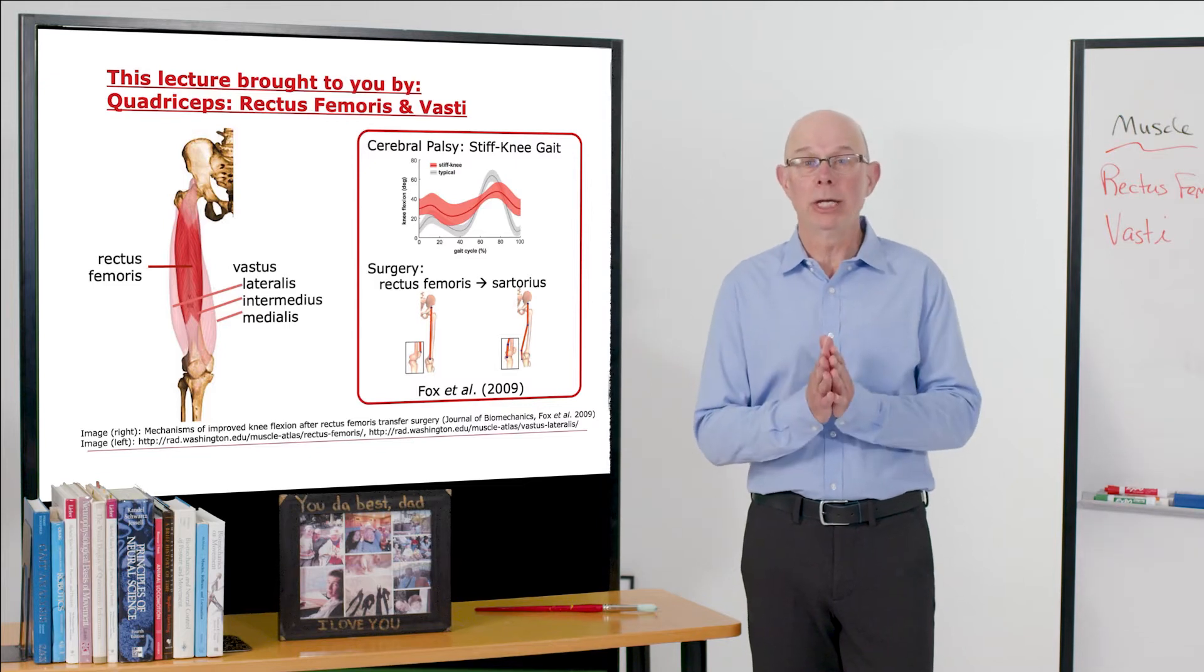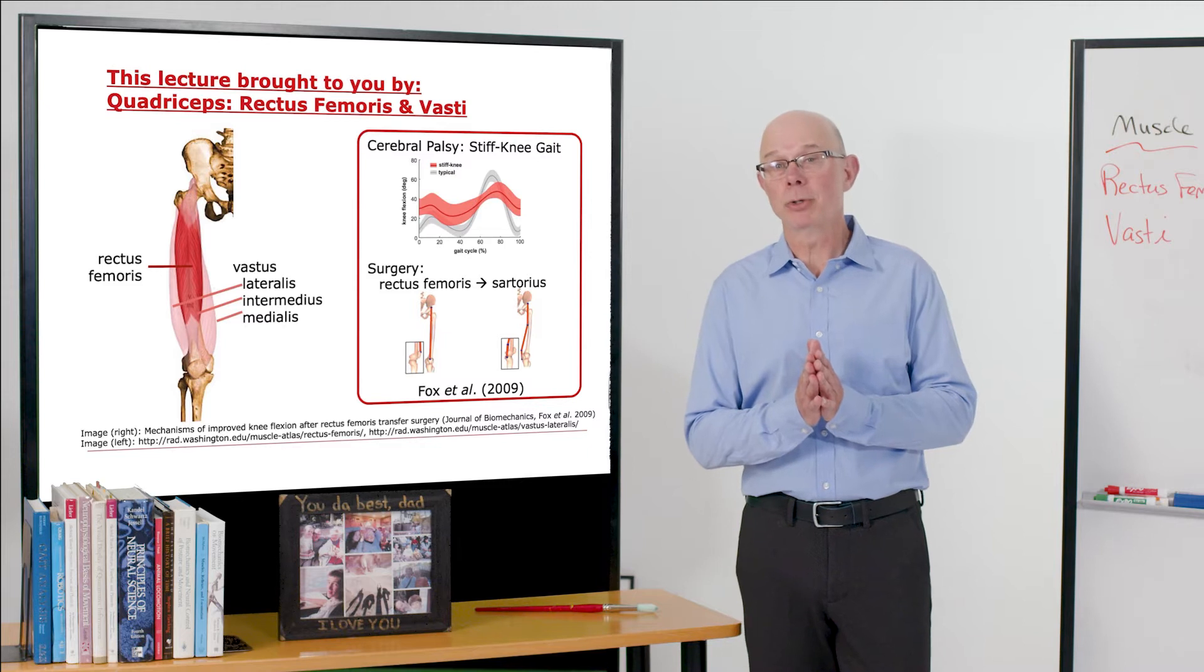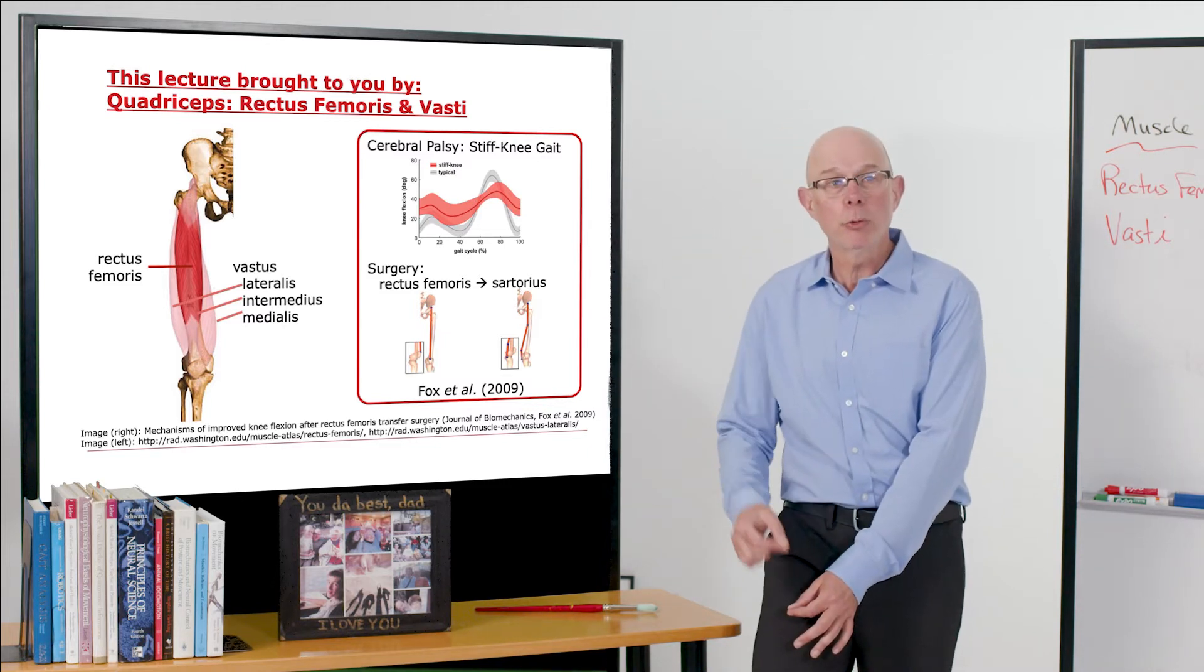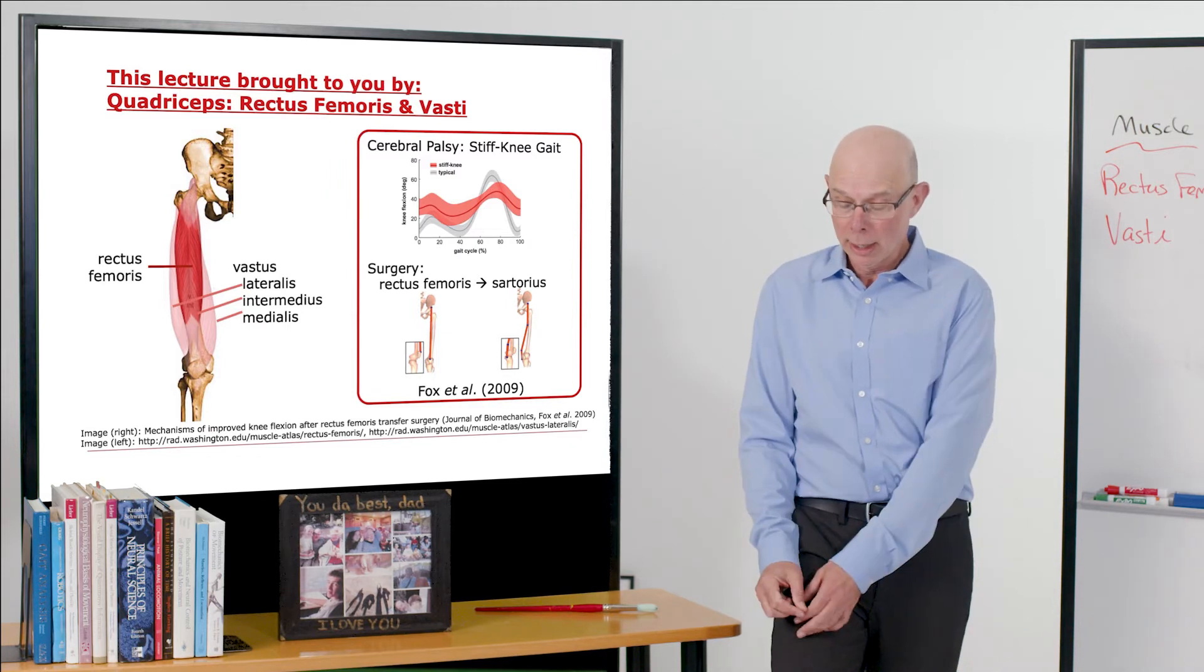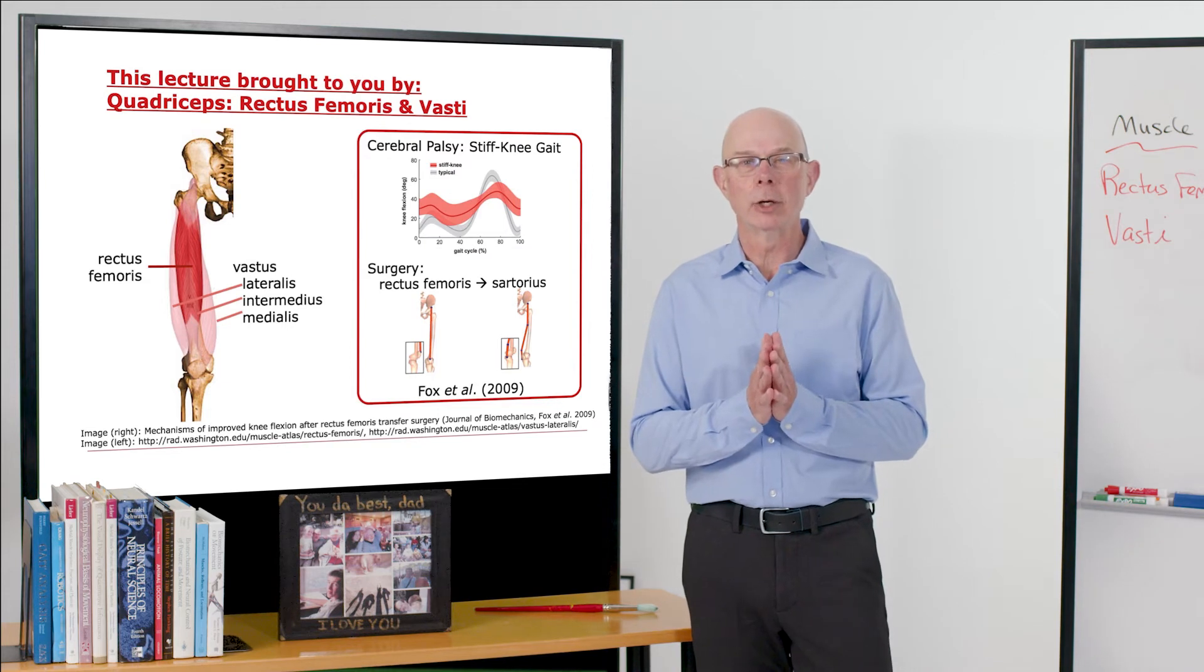If we ever want to get EMG of the vastus intermedius, it's a tricky procedure. We have to take a long EMG electrode, insert it through the rectus femoris, down until we hit the bone, back it out a little bit, and we can get a good signal from the vastus intermedius.